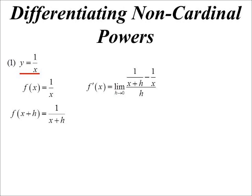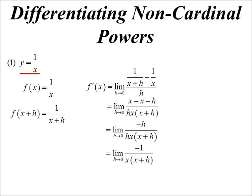Function x plus h would be 1 on x plus h. Sub that into our formula and let's tidy that up. We get a common denominator of x times x plus h, but that moves to the bottom of the fraction. So on the bottom we now have h times x times x plus h. On the top we have x minus all of x plus h. The x minus x cancels. We get minus h. Now the h's will cancel. We get minus 1 on x times x plus h. I can substitute the 0 in now without any problems and I end up with minus 1 on x squared.